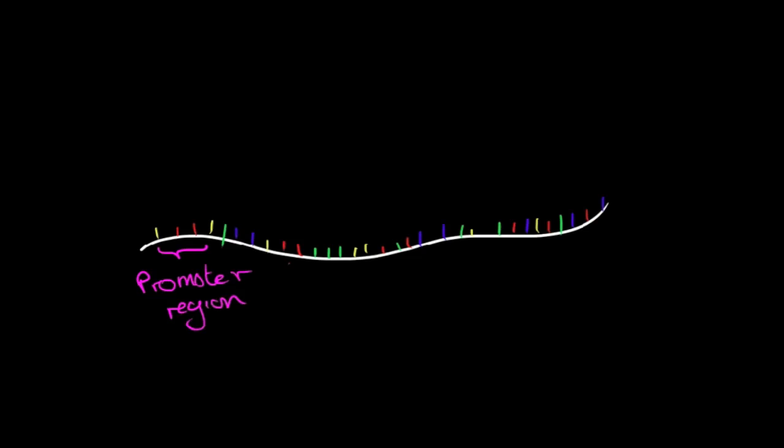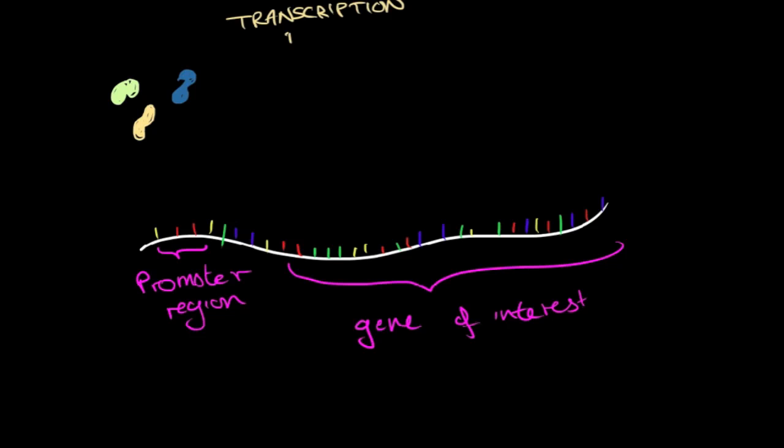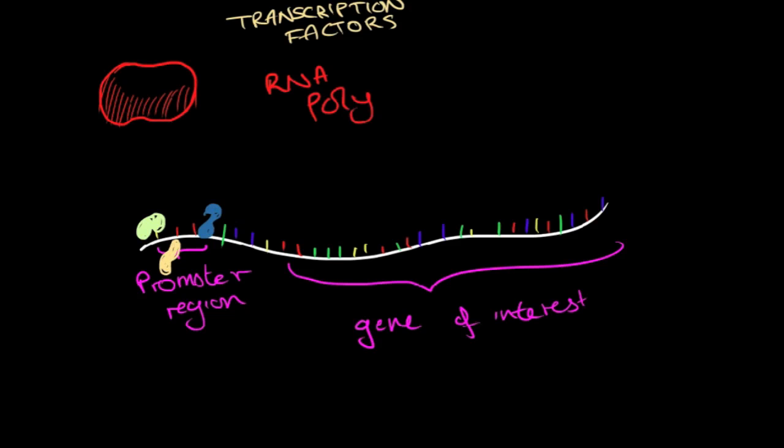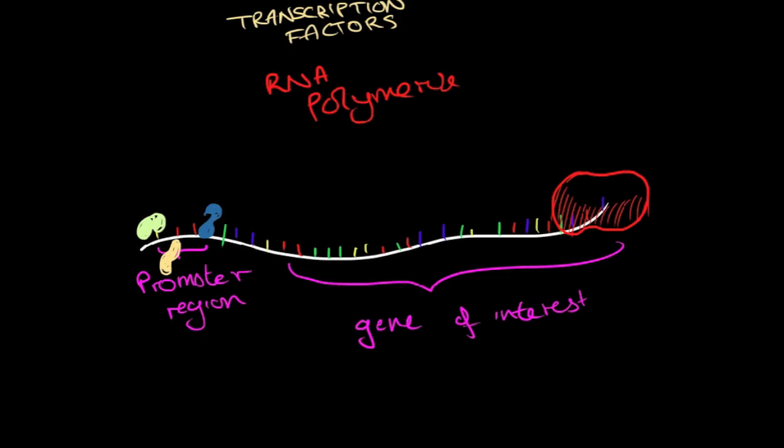Each coding gene has a promoter. Promoters are a region in the DNA that starts the transcription of a gene. For this reason, promoters are located closely to the gene they are related to. Little proteins called transcription factors bind to the promoter and recruit an RNA polymerase to the gene to produce a messenger RNA copy of the gene.